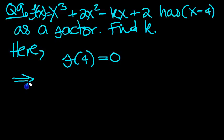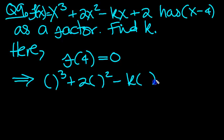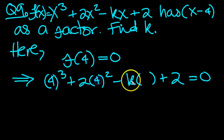And this implies, put the value of 4 in, so it will be x cubed plus 2x squared minus k times x plus 2 equals 0, and the input value is 4, so I'll put that in now.